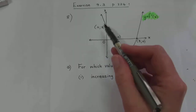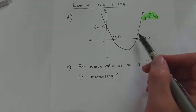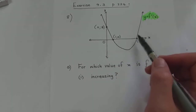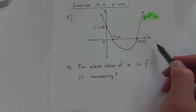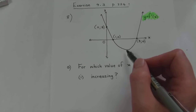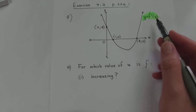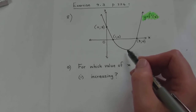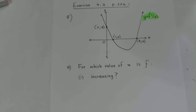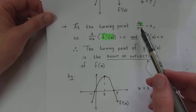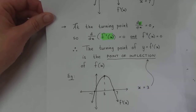Where the graph is above the line, f(x) is increasing; where it's below the line, f(x) is decreasing. And this value right here, which is the turning point of this derivative graph, is not the turning point of f(x) — it's going to be the point of inflection of f(x). If I find the turning point of the derivative, it gives me the point of inflection.